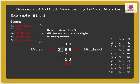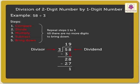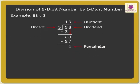Subtract 27 from 28, which is equal to 1. Now, as there are no more digits to bring down, we have finished our division. The quotient is 19 and the remainder is 1.